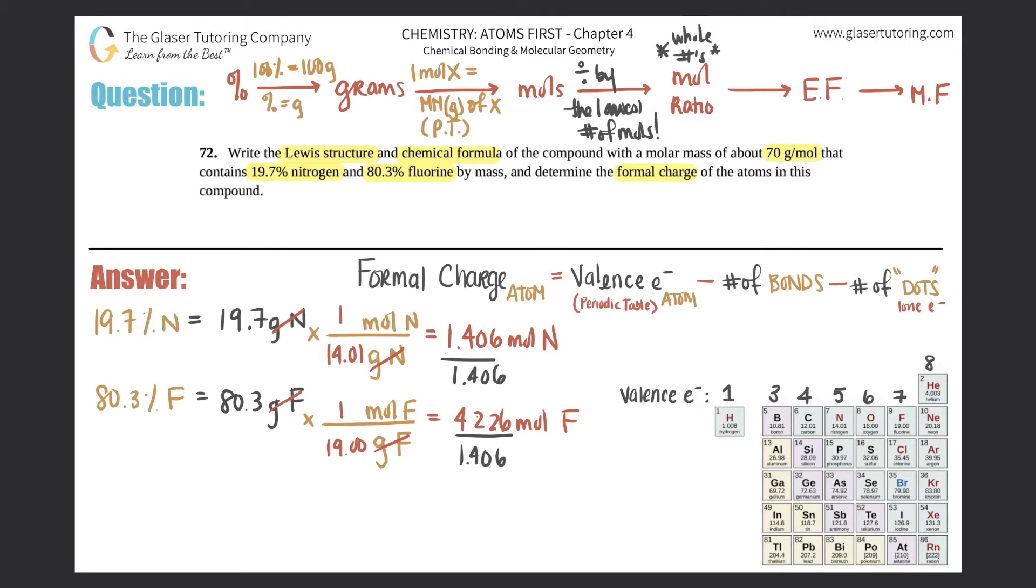1.406 divided by 1.406, that would obviously be 1, so this would say 1 mole of nitrogen. And then 4.226 divided by 1.406, we get 3.0056, but that's super close to 3 moles of fluorine.